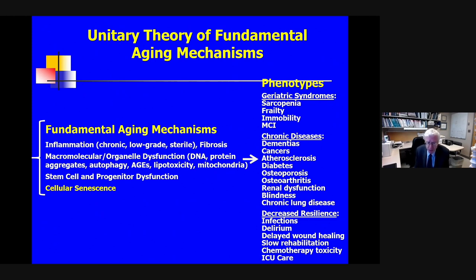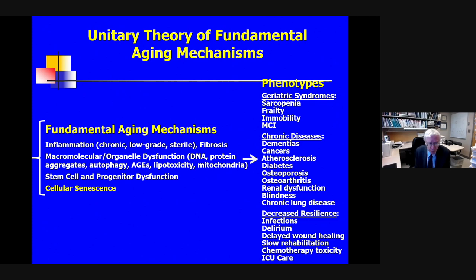Aging is by far and away the largest risk factor, and it's looking increasingly like fundamental aging mechanisms may drive these conditions. You can divide these so-called pillars of aging into anywhere from four to thirteen categories, but they're all interlinked in what we call the unitary theory of fundamental aging mechanisms — if you target one of them, you tend to affect the rest. I like to think simply in terms of categories: inflammation that's usually chronic, low-grade and sterile; macromolecular and organelle dysfunction; stem and progenitor cell dysfunction; and cellular senescence, which I'm going to focus on.